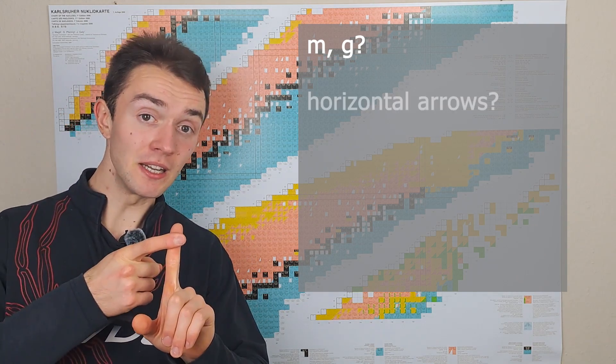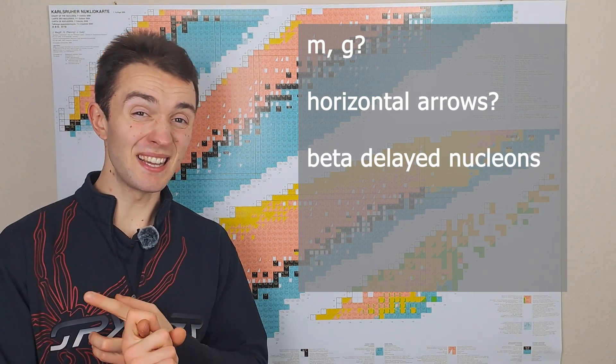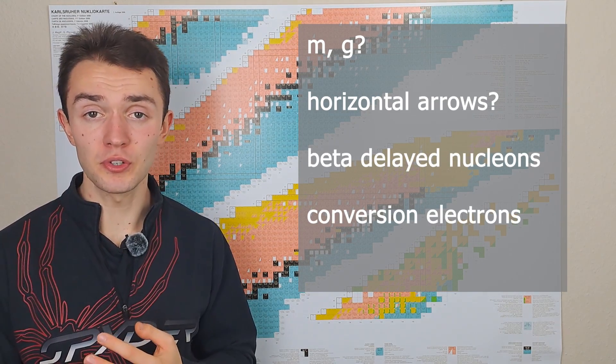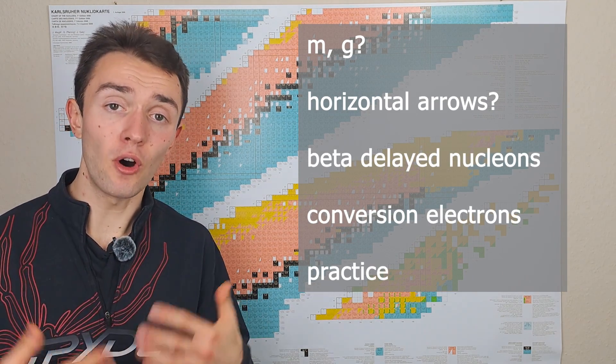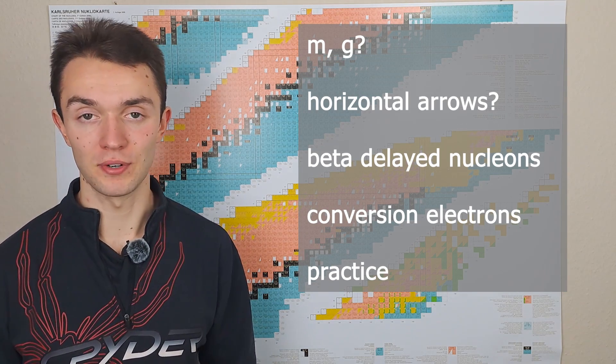What does M and G mean? What do these horizontal arrows mean? Beta delayed nucleons and conversion electrons. And if we understood all of that, we can then do a practice on three different isotopes.